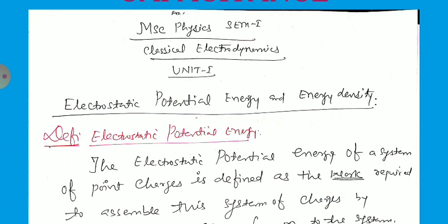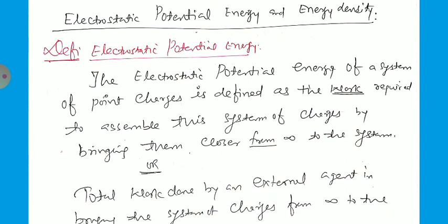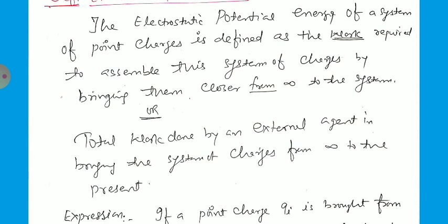What is meant by electrostatic potential energy? The electrostatic potential energy of a system of point charges is defined as the work required to assemble this system of charges by bringing them closer from infinity. Or, the total work done by an external agent in bringing the system of charges from infinity to their positions. In simple language, the energy required or the work done to assemble a system of charges is called the electrostatic potential energy. This is the stored energy of the system.